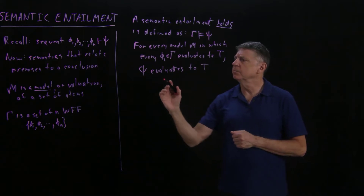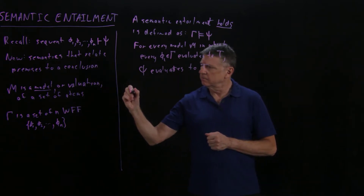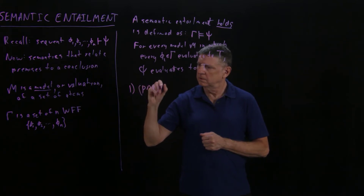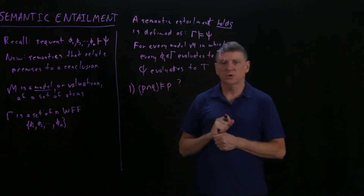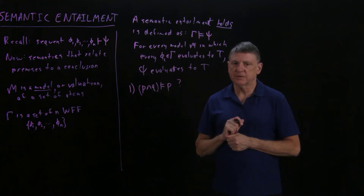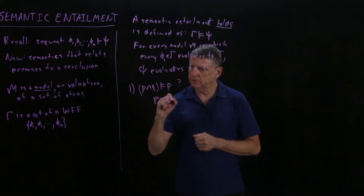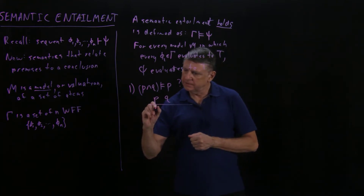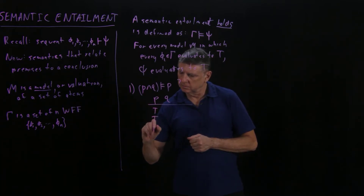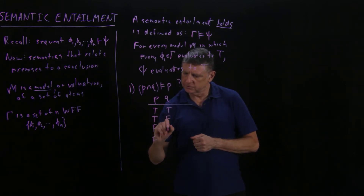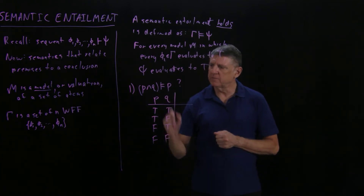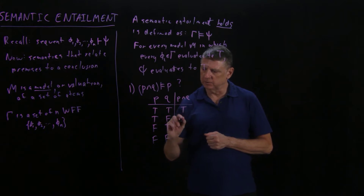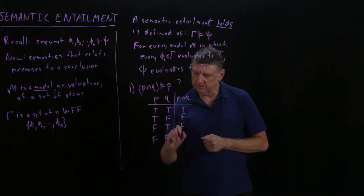Let's go through some simple examples to be sure that we understand that. First, does P and Q semantically entail P? Let's put a question mark there. One way we can answer this is by writing out the truth table. The truth table has columns P and Q, and each row is a model: T/T, T/F, F/T, F/F. The premise we're interested in is P conjoined with Q, and we know that truth table looks like: T, F, F, F.